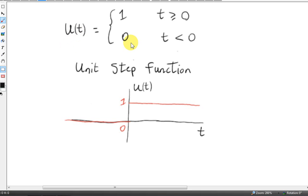A causal function is a function that is zero for negative values of the independent variable. Now in this example, the independent variable is t.